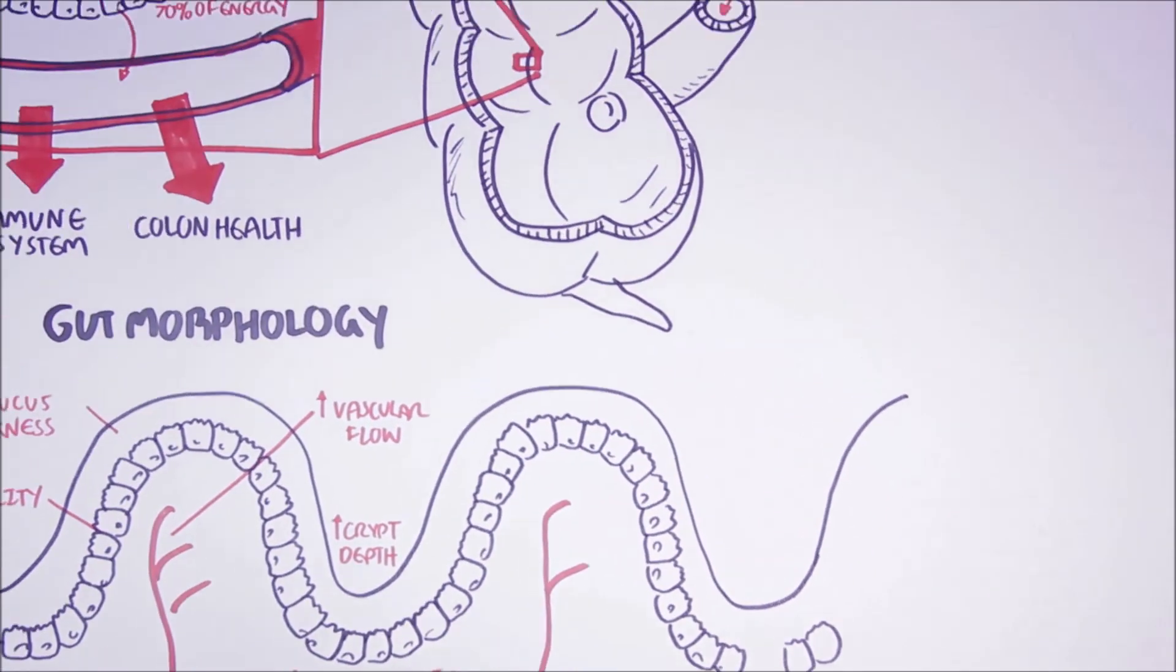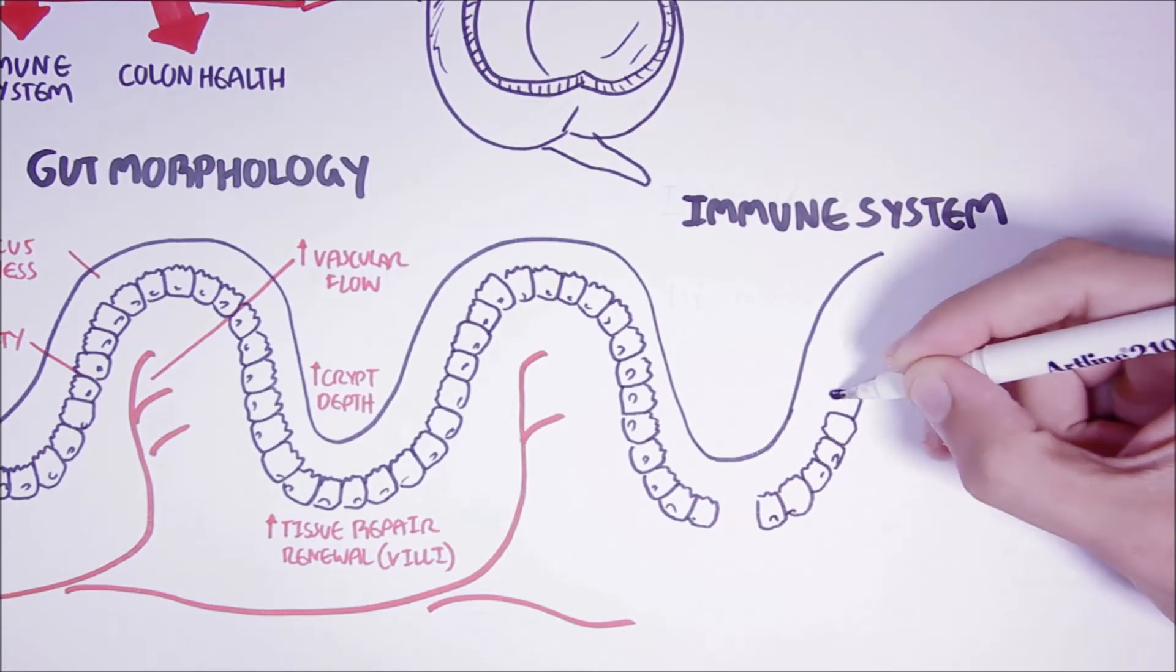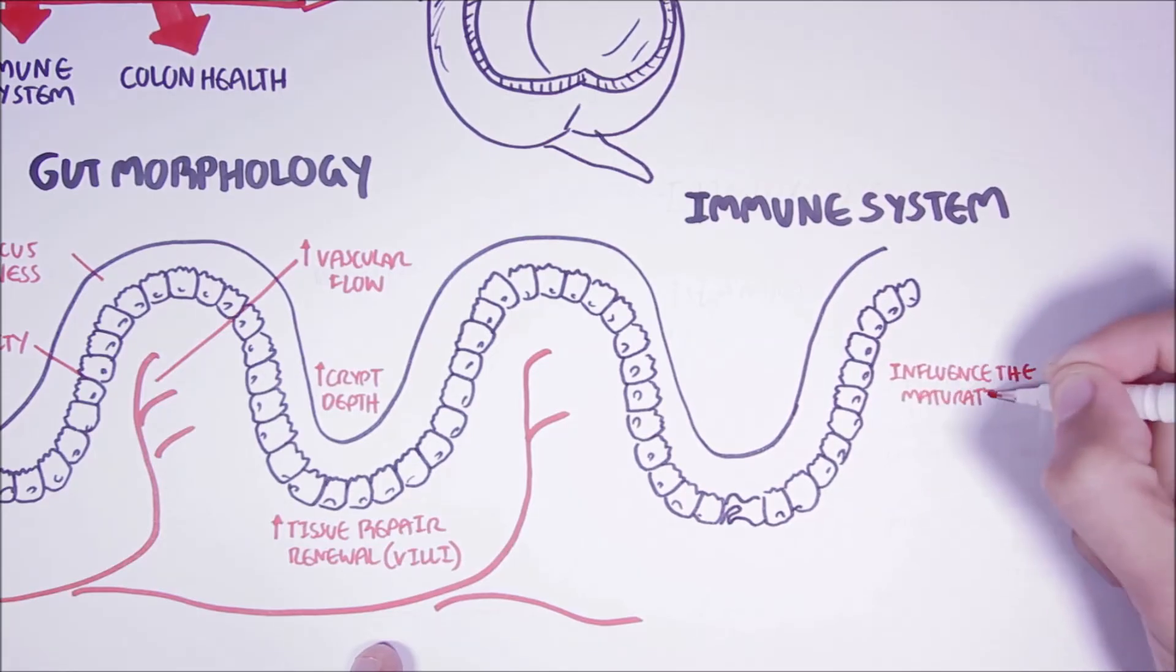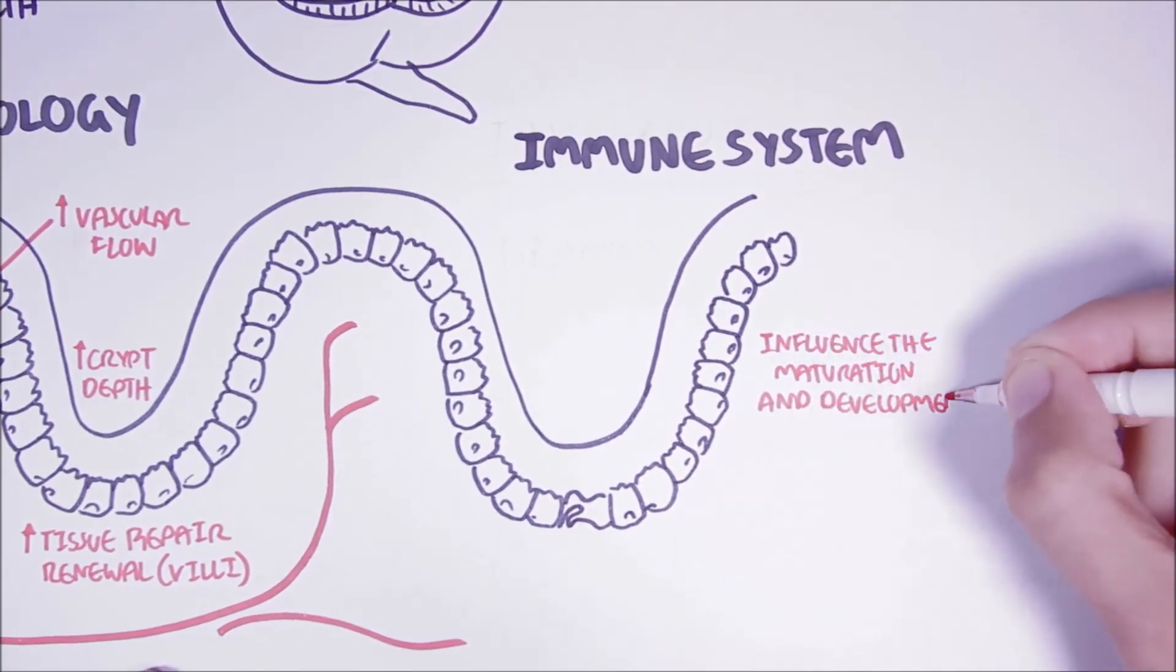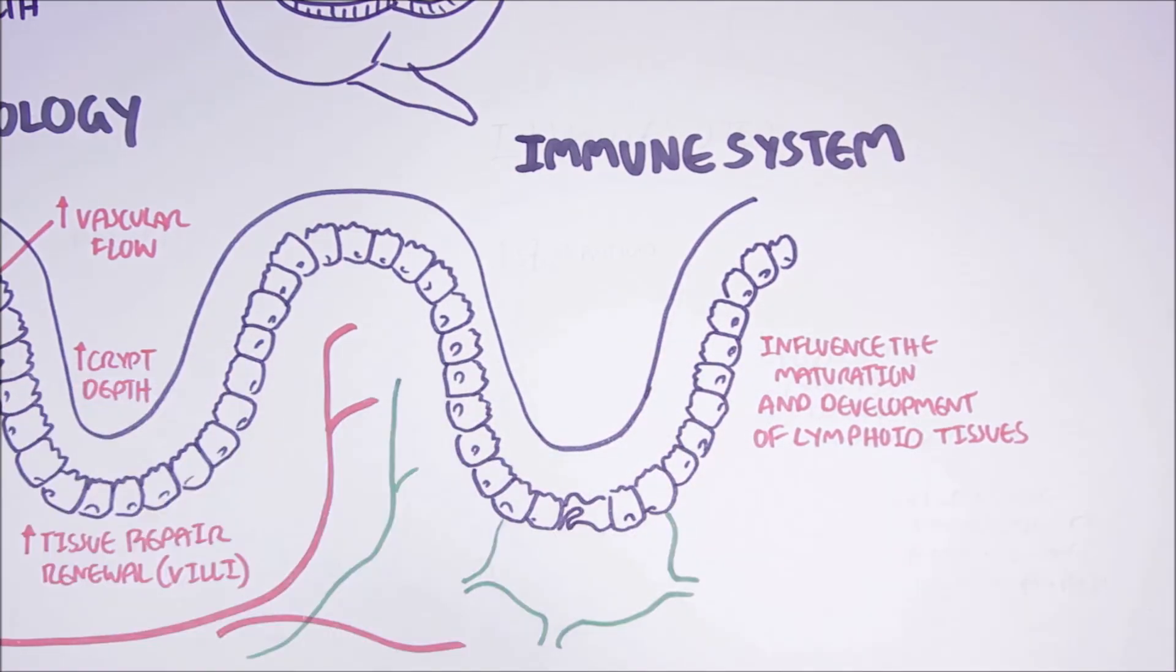The gut microbiota has also shown to have effect on the immune system. For example, it has shown to influence the maturation and development of lymphoid tissues, such as Peyer's patches in the mucosal system, as well as the lymph nodes.